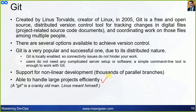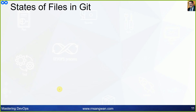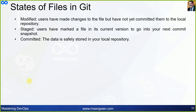Git supports nonlinear development — thousands of parallel branches with thousands of developers — and is able to handle large projects efficiently. By the way, why did he name it 'git'? According to Linus, 'git' means a cranky old man — and he meant himself, joking he was old enough at 36.